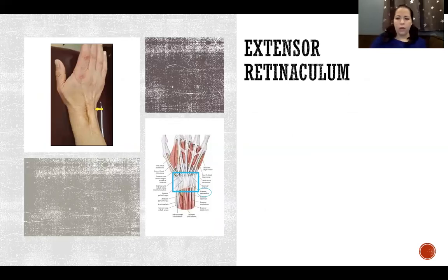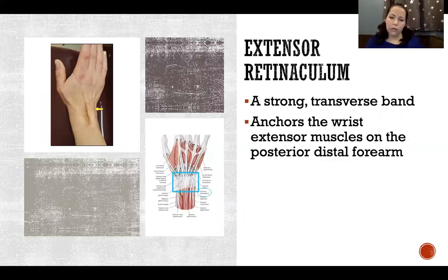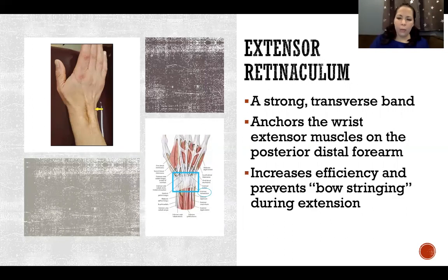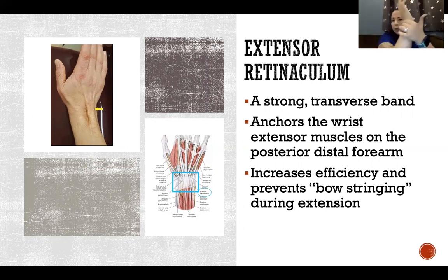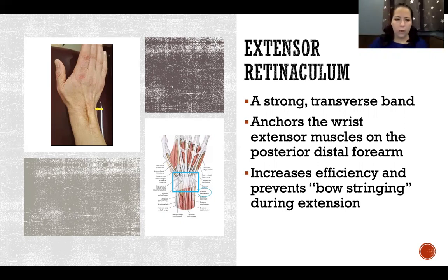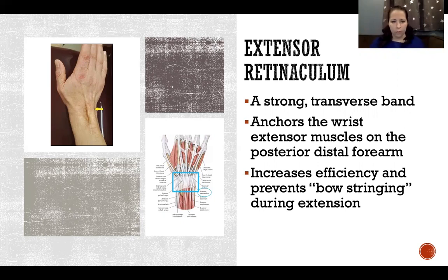The extensor retinaculum is a strong transverse band that anchors the wrist extensor muscles on the posterior distal forearm. Its purpose is to hold down the tendons passing through that area so that during hyperextension they don't bowstring — meaning they don't pop outward. As shown in the top-left picture, when the extensor retinaculum is injured and the wrist goes into full or hyperextension, the tendons visibly bowstring because they are no longer anchored. That is all for this lecture.